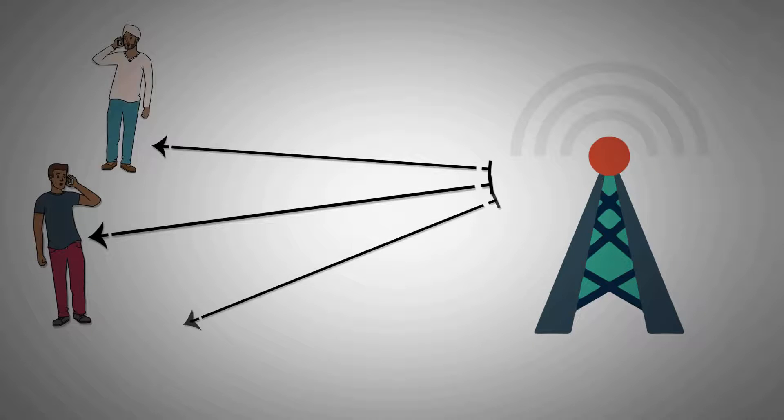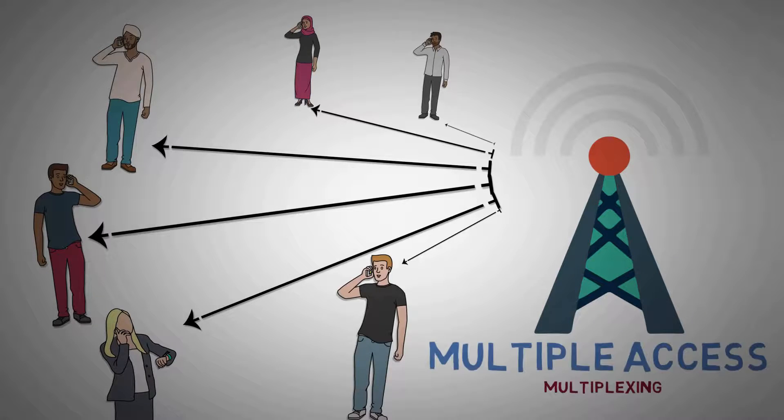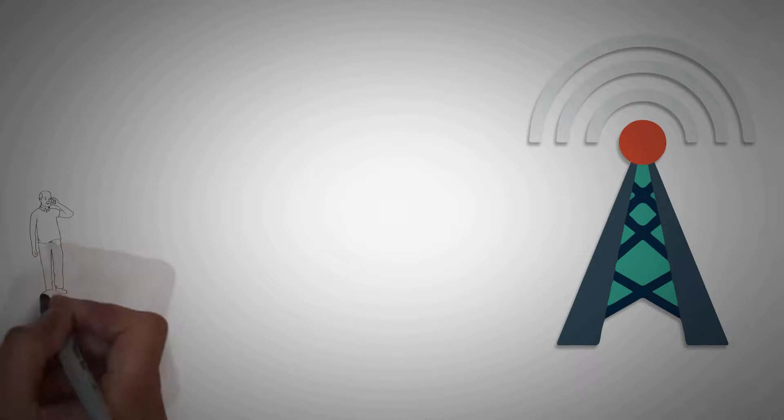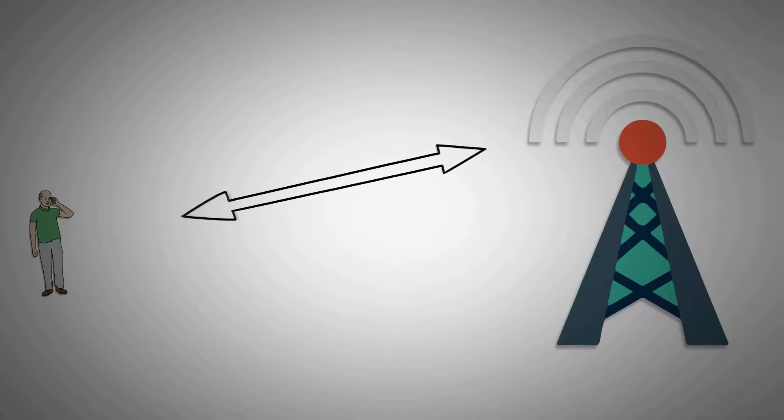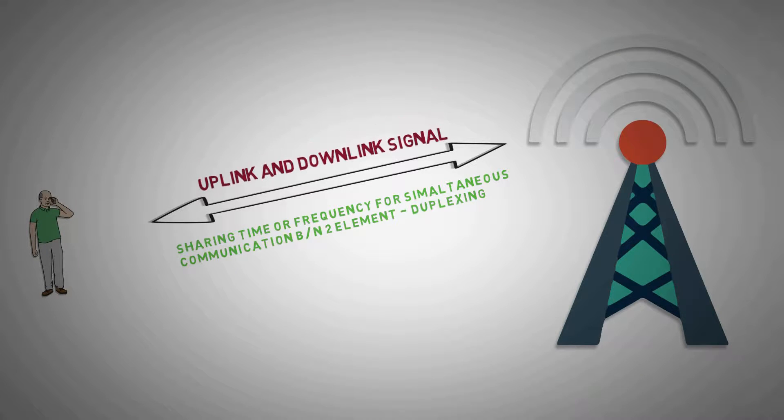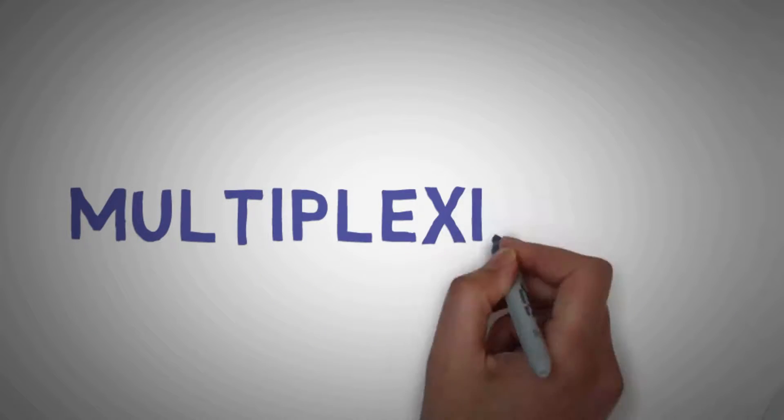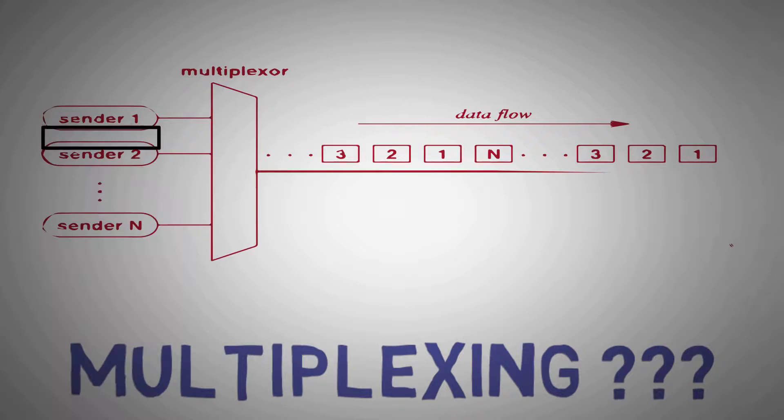We will show how multiple users access network using multiplexing. In the last video we have shown how two signals were combined over a common pathway in duplexing. So, what exactly is multiplexing? Multiplexing is the process of combining multiple signals and transmitting them over a common channel.